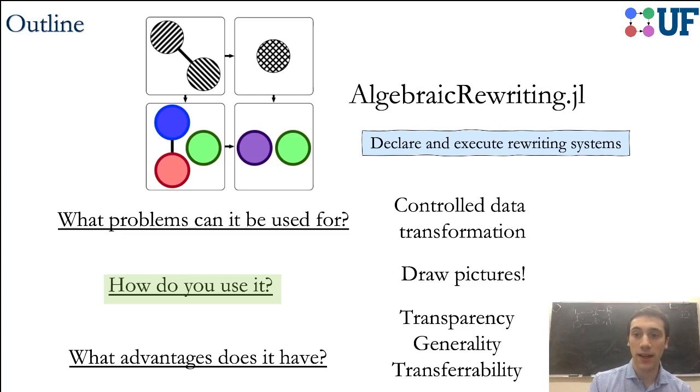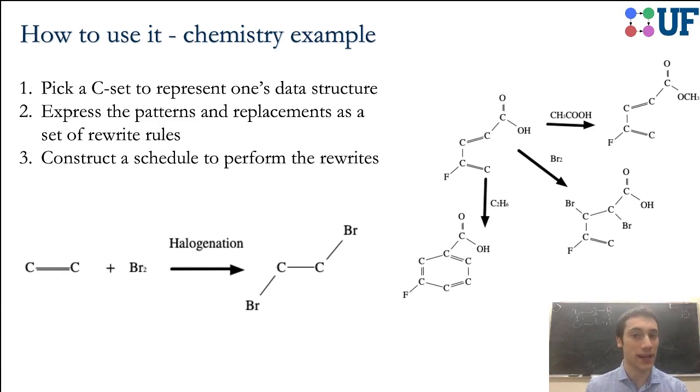Hopefully that showed that these kinds of methods can be applied in diverse settings, and now I want to talk more about a particular example to show what it's like to code up a particular rewriting system. I'll walk through the process of using algebraic rewriting to perform a chemistry simulation. There's three major steps here, and we're going to start with defining the data structure that we're going to perform rewrites on.